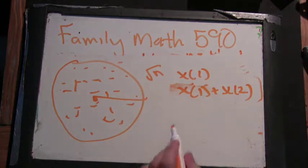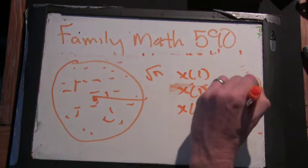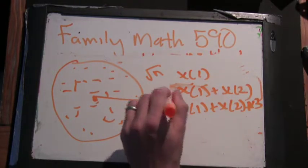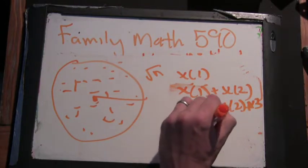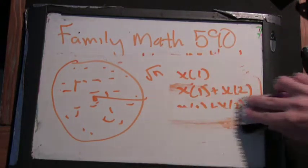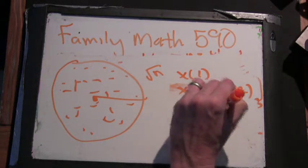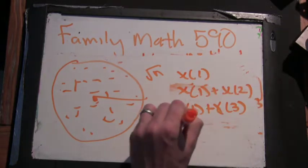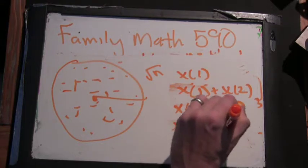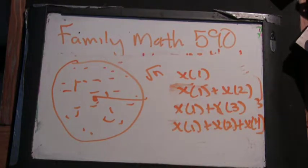Okay, and then for 3 it would be chi of 1 plus chi of 2 plus chi of 3. For 4 it would be chi of 1 plus chi of 2. For chi of 3, chi of 1 plus chi of 3. For 4, chi of 1 plus chi of 2 plus chi of 4. What would it be for chi of 5? Chi of 1 plus chi of 5.